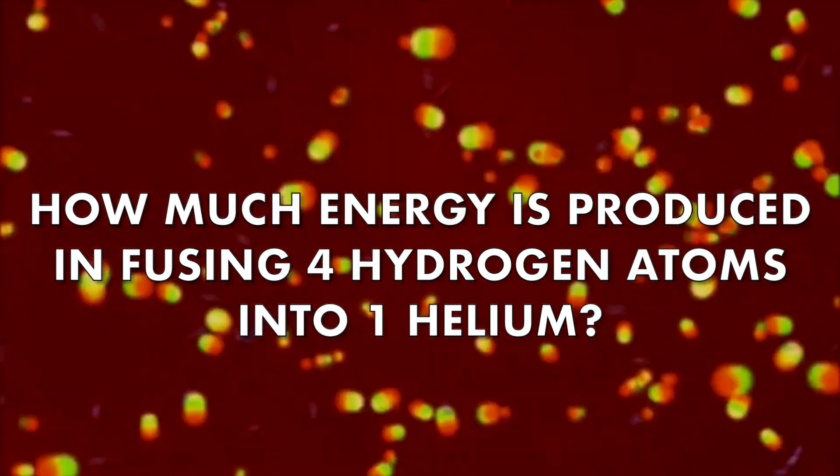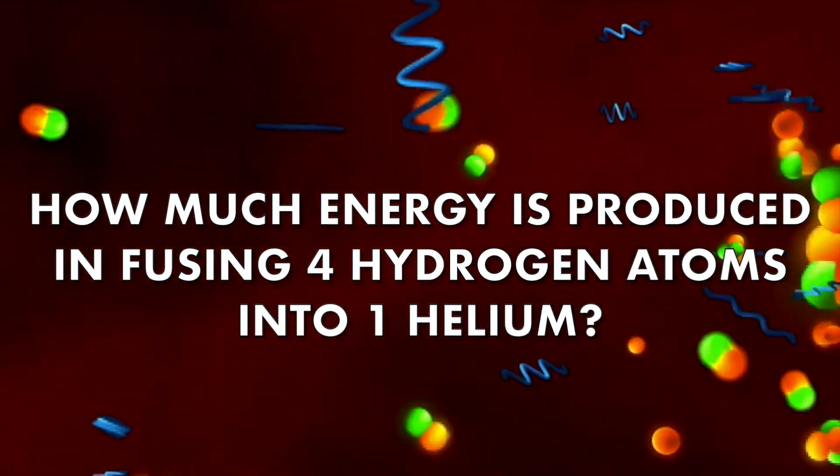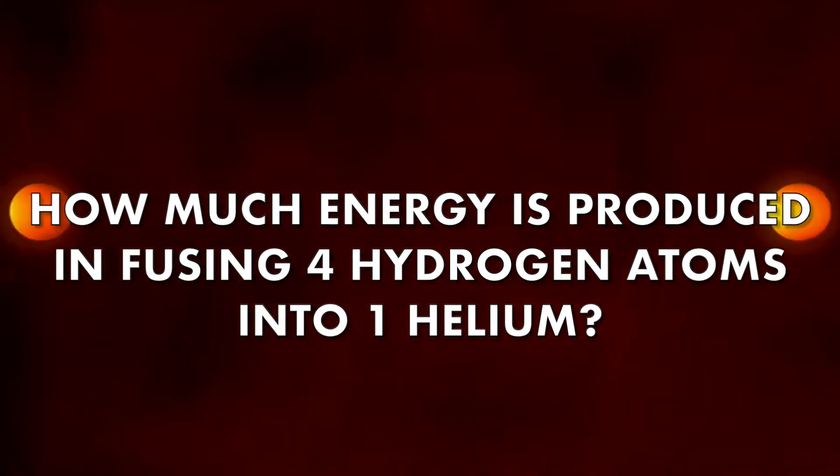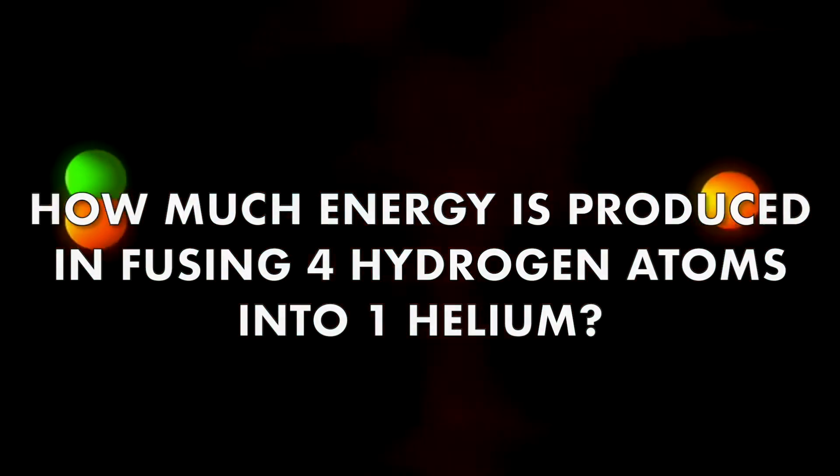Since we're talking about the core of the Sun, we're basically asking how much energy is produced when four hydrogen atoms fuse to become one helium atom. The mass of a single hydrogen atom is really tiny.